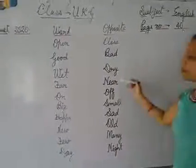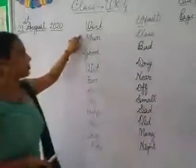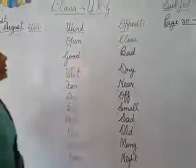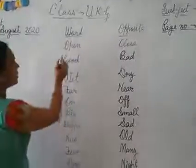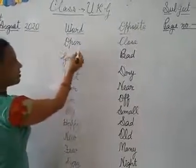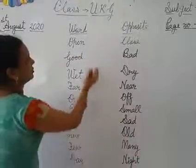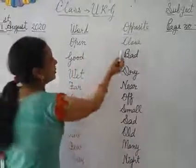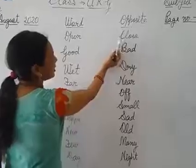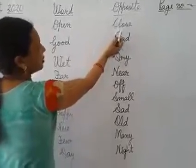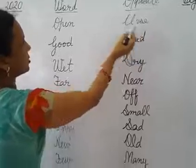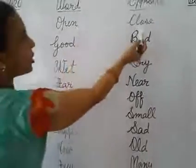Say with me. Look here. Opposite. Say with me: O-P-E-N. Open. What is the opposite of open? Say with me: C-L-O-S-E. Close. Open. Close.